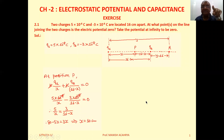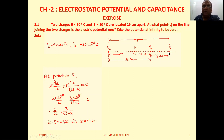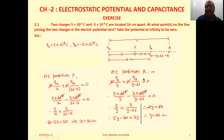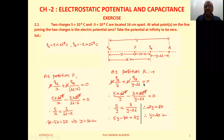Now for another point where the potential is zero — that is outside the two charges. Suppose point R, where the resultant potential becomes zero, is at a distance Y from charge Q1. So it is at a distance (Y - 16) from charge Q2, as shown in the figure.